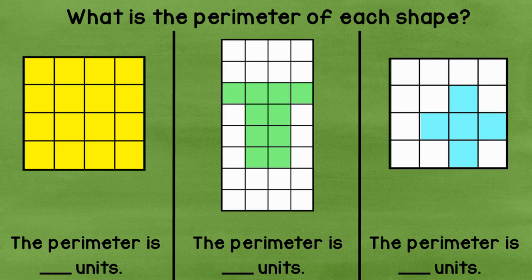Now here we have three different shapes. Taking a look at the first one, why don't you go ahead and count the outside edges and tell me out loud what you think the perimeter of the first one is. Go ahead.